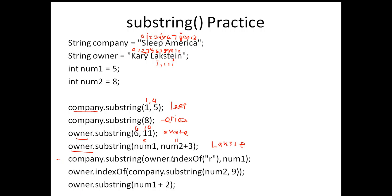The next one: company.substring(owner.indexOf('R'), num1). The first parameter is owner.indexOf('R'), which finds the first R in owner — that's at position 2. Num1 is 5. So it becomes company.substring(2, 5), which goes from position 2 to 4 in company — that's E, E, P.